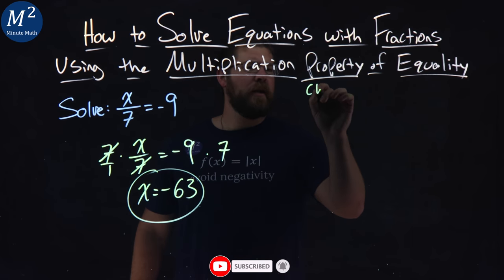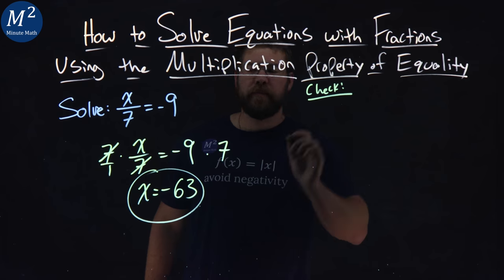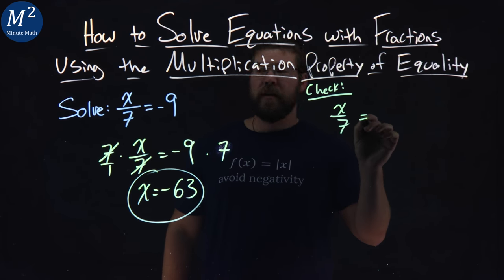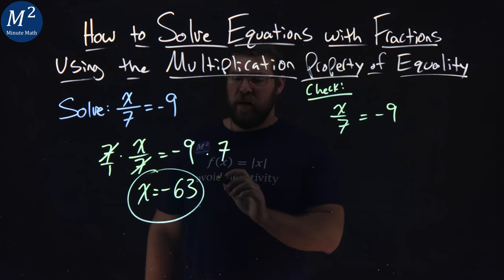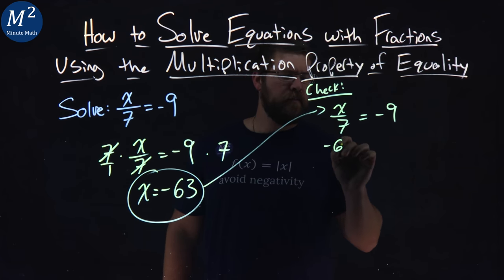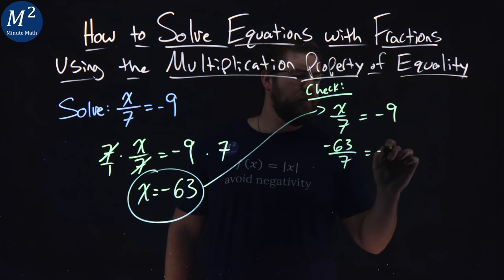Now, from here, we want to check our work. To check it, we rewrite our equation. x over 7 equals negative 9. Substitute negative 63 in for x. Negative 63 over 7 equals negative 9.